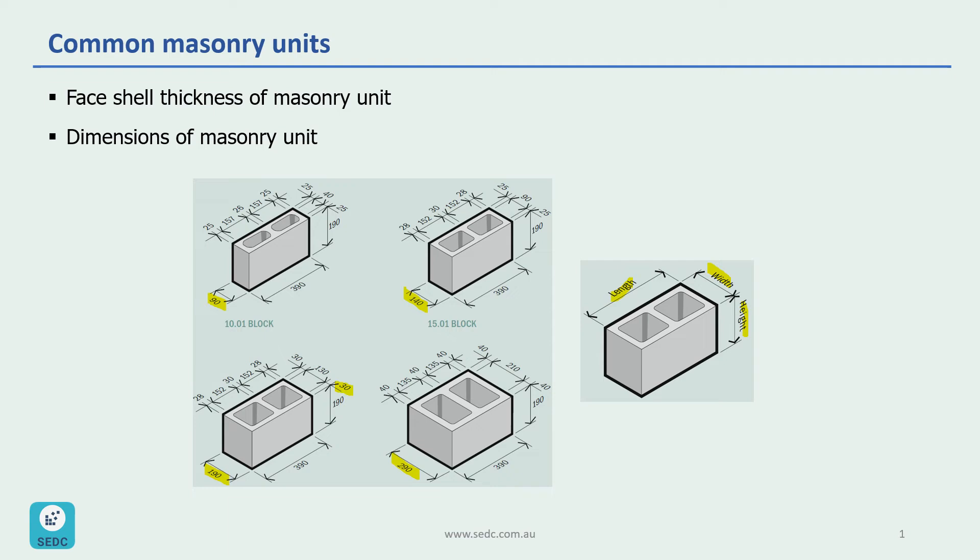For example, 190 blocks has a 30 millimeter face shell thickness, 140 and 90 blocks has 25 millimeter face shell thickness, and 290 block has 40 millimeter face shell thickness.